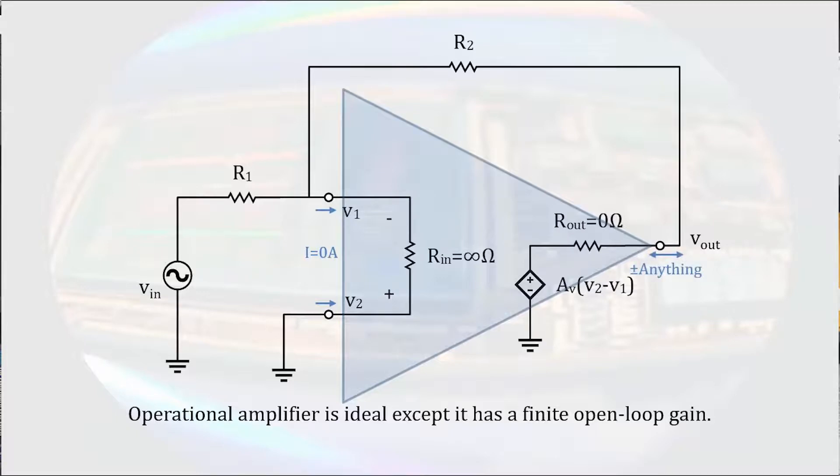Something we may notice is that if the output resistance of the amplifier is zero, the output voltage will be equal to the output of the dependent source. This will help us analyze the behavior of the circuit with a finite open-loop gain.